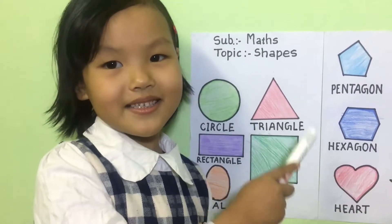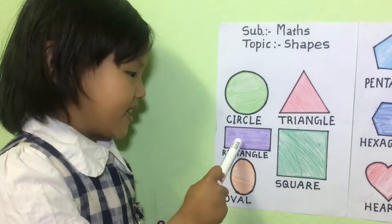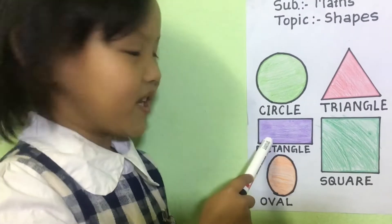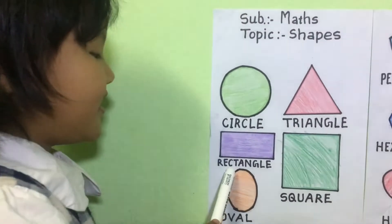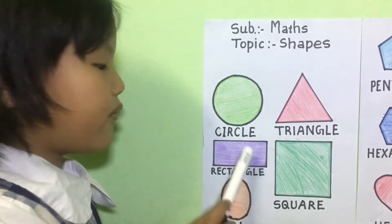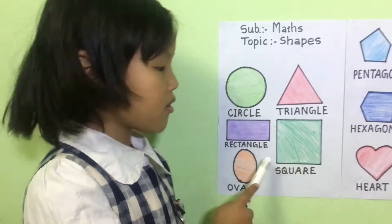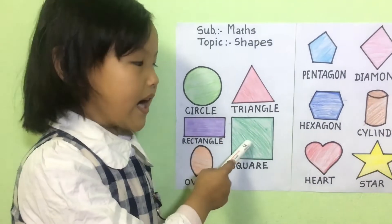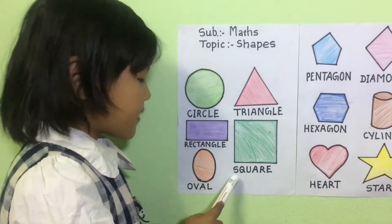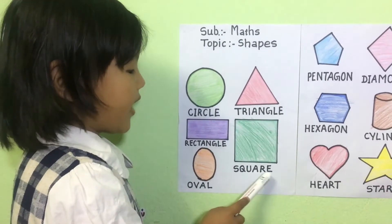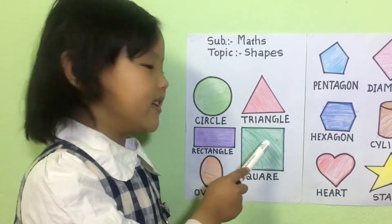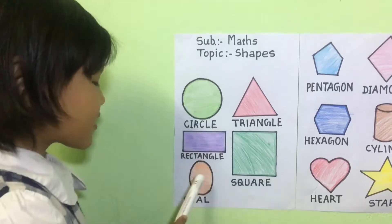The next one is triangle. The name of triangle is T-R-I-A-N-G-L-E, triangle. The color of triangle is red. The next one is rectangle. The rectangle's name is R-E-C-T-A-N-G-L-E, rectangle. The rectangle color is purple.